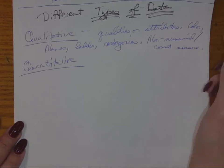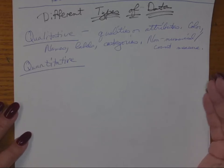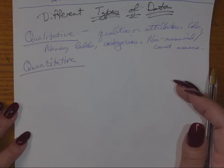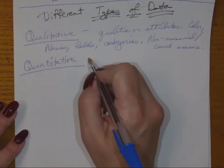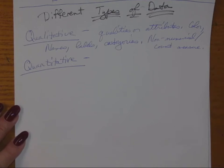Even if qualitative data has a number on it, that number is used more for naming or organizing — it's not for counting. Something I can count would be like weight or height. So qualitative includes color of eyes, color of hair, whether or not somebody has glasses. If it's a yes/no answer, it's probably qualitative because we're talking about a quality, characteristic, or attribute.